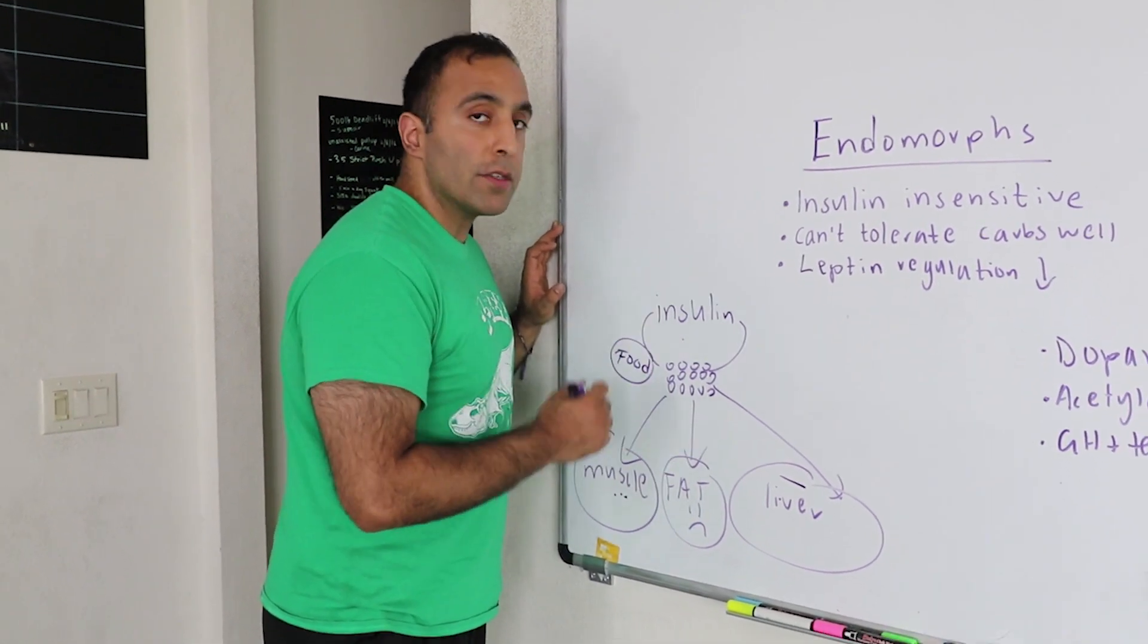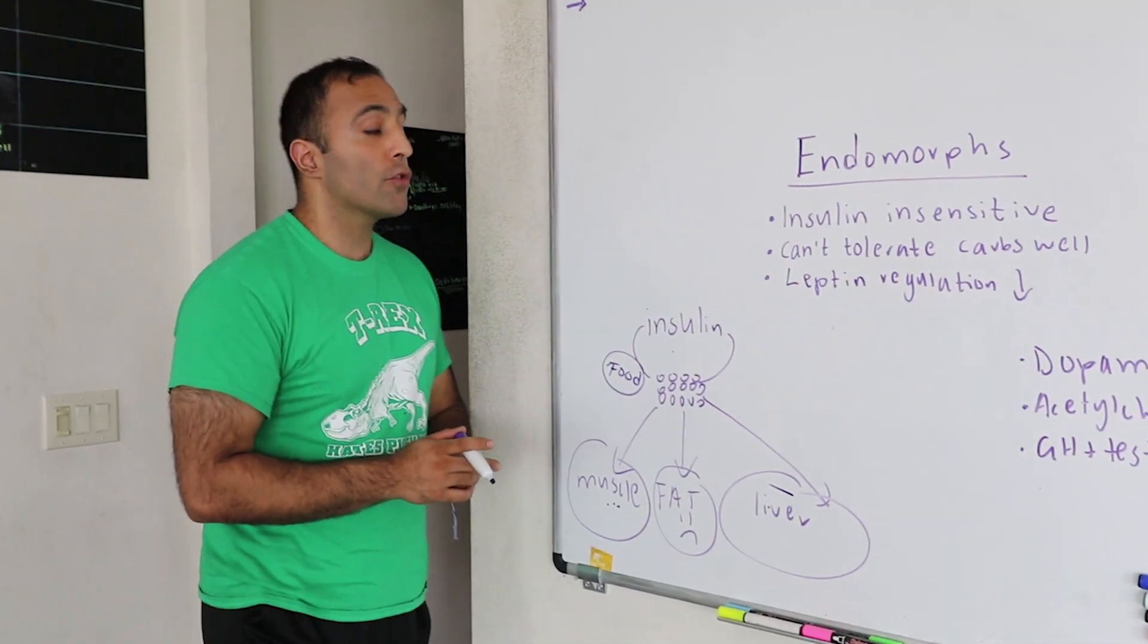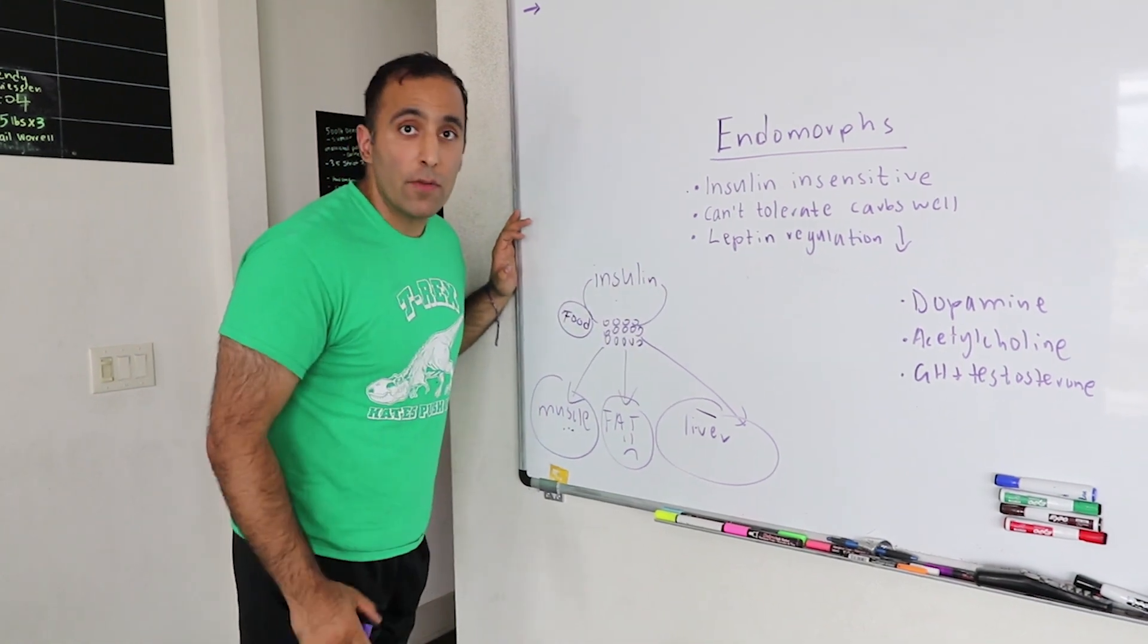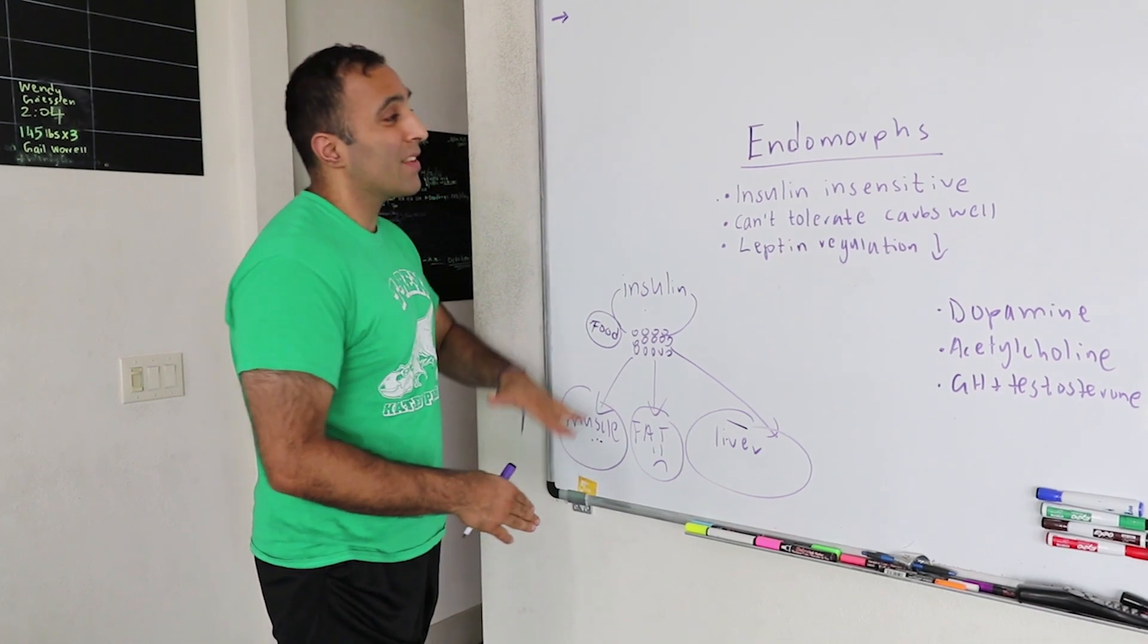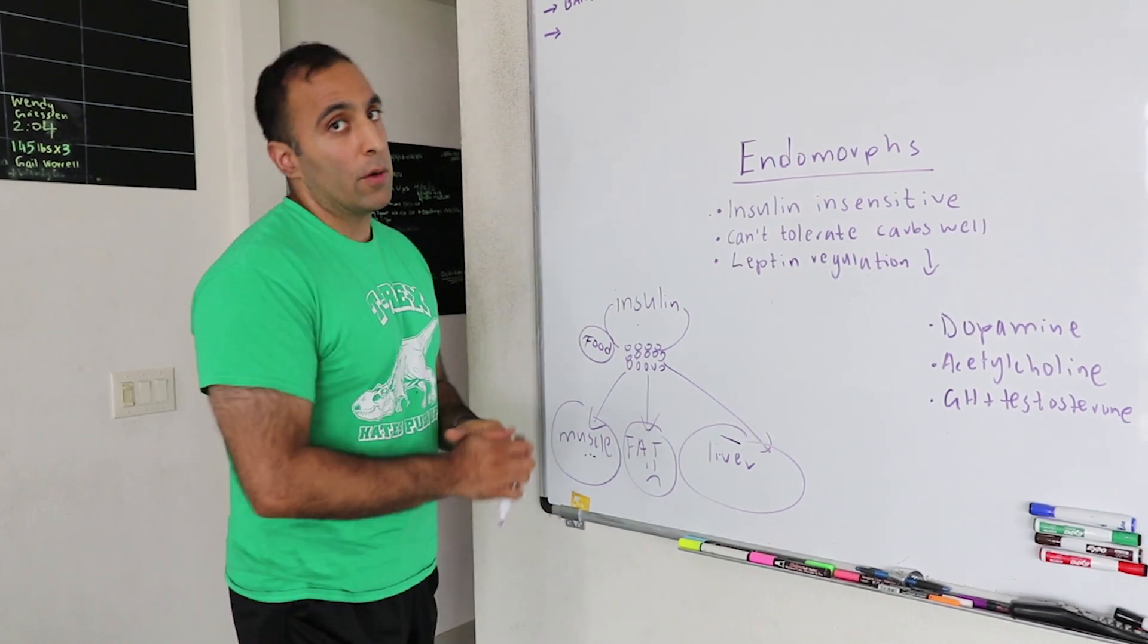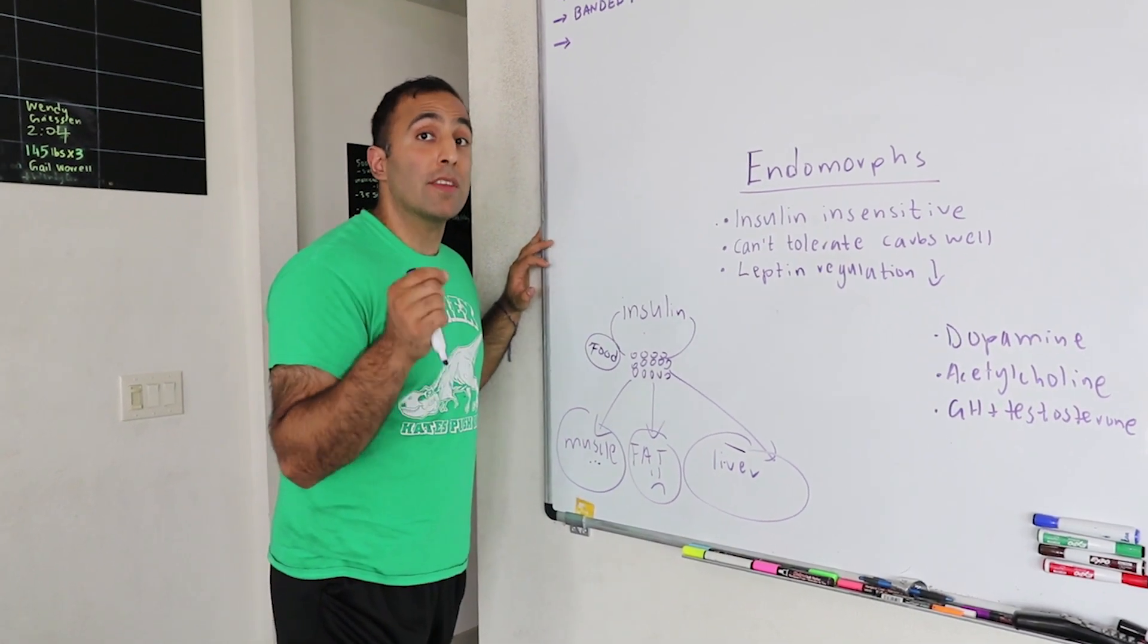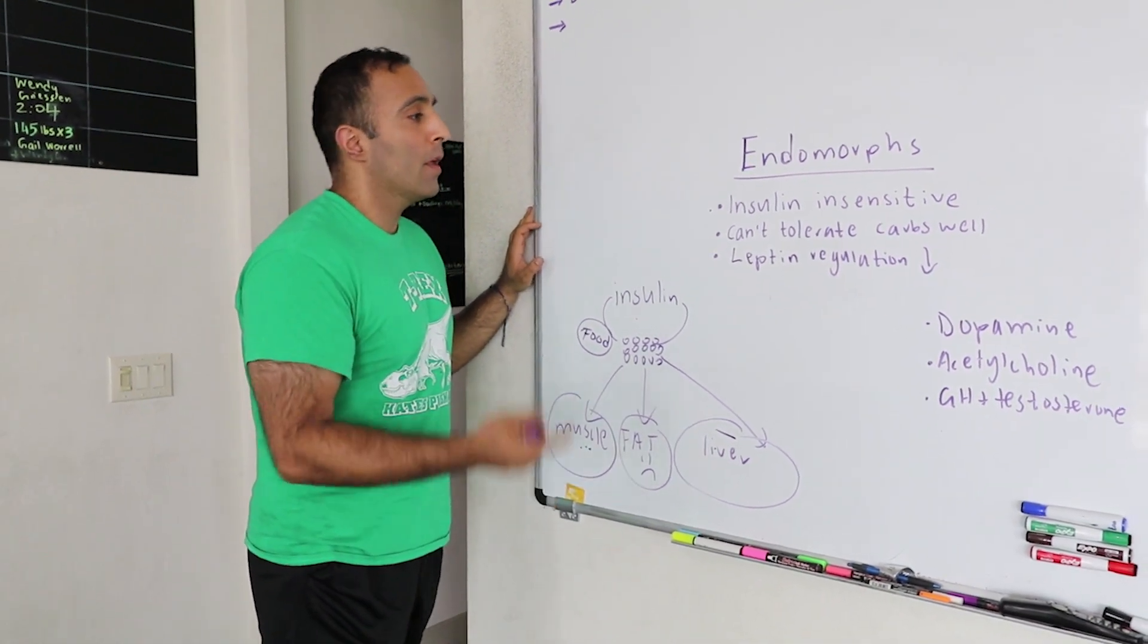To understand what we need to do for endomorphs, we have to understand what different foods do to them. Sugary foods and high carbohydrate foods typically have a very high insulin response in endomorphs and they're very insulin insensitive. That means the muscle tissue is not able to sense insulin that's around, so it's not able to actually uptake the nutrients that you need to go into the muscle cell. That being said, we have to be smart in regards to when we put carbohydrate into our body, which tends to have the highest insulin response for endomorphs.